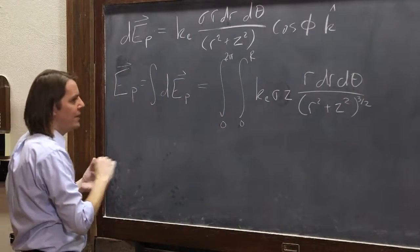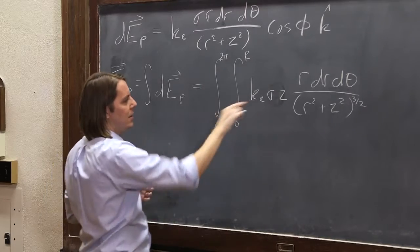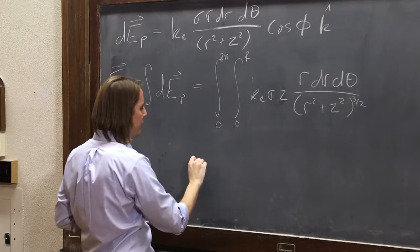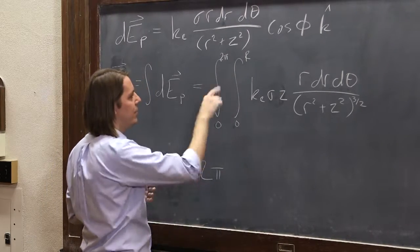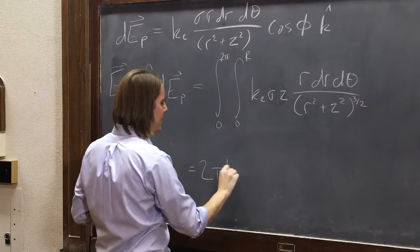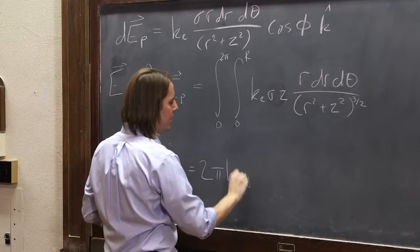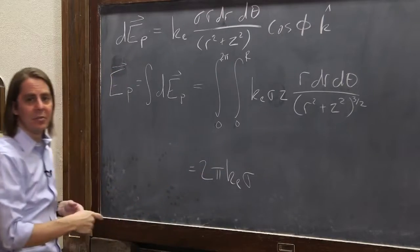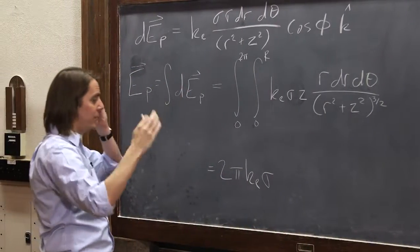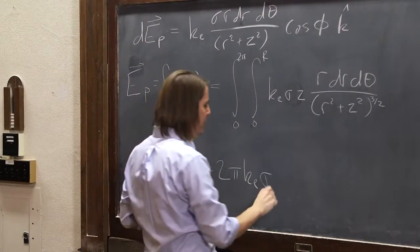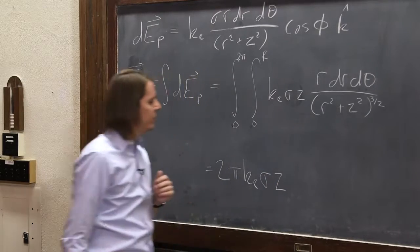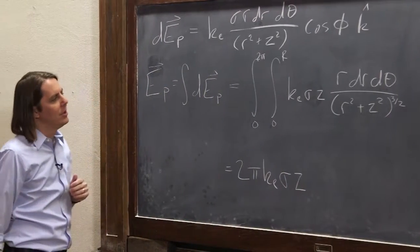So let me just write it as 2 pi as part of the constant. So the 2 pi is the theta integral. And then you still have a ke and you have a sigma. And actually, z is a constant in this case. z was just how far out are we. So really, that's not changing as we move around the disk. So there's our constants. 2 pi, ke, sigma, and z.